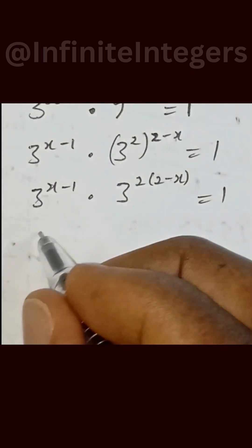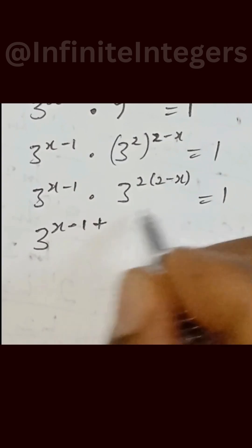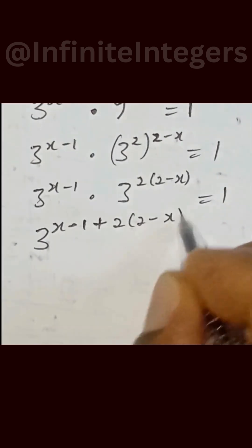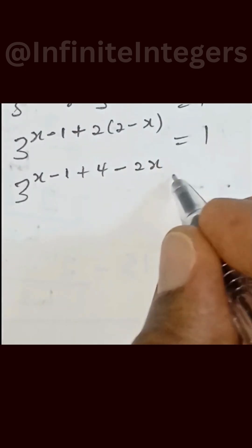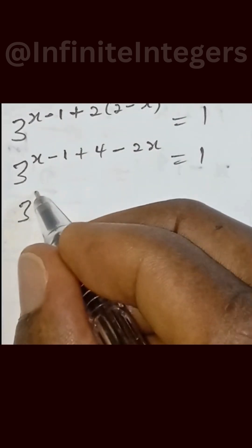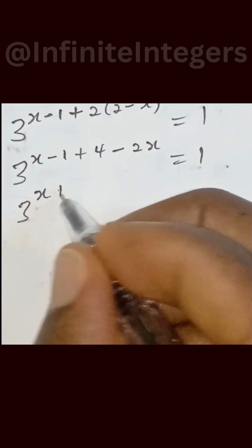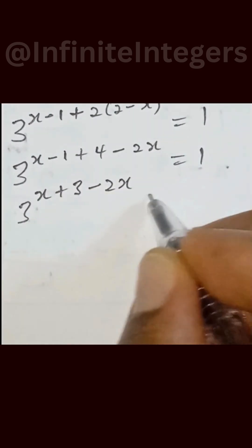So we have this equal to 3 raised to the power x minus 1 plus the exponent 2 into bracket 2 minus x equal to 1. This gives us 3 raised to the power x minus 1 plus 4 minus 2x equal to 1. So x minus 1 plus 4 gives us plus 3, then minus 2x, equal to 1.